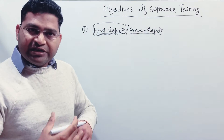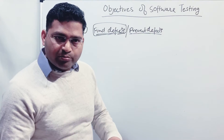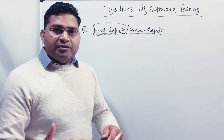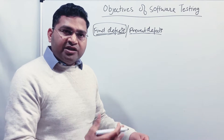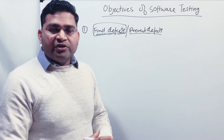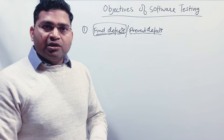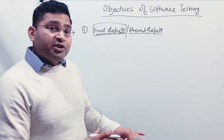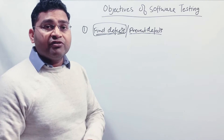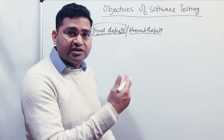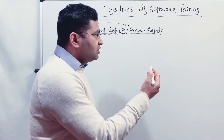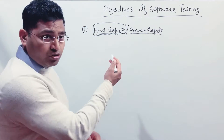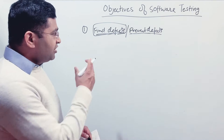You are preventing the defect by providing your inputs to the team and making sure that all the obvious scenarios and test scenarios you will be going to test are being covered when a developer actually tries to implement the code for that particular software. That's the first objective — very important, very common.